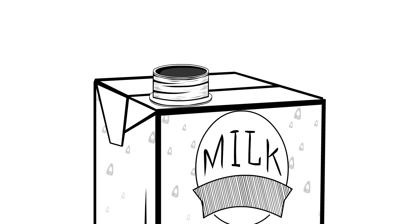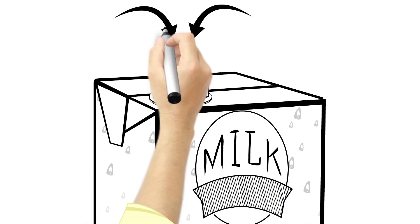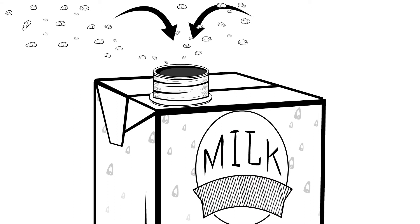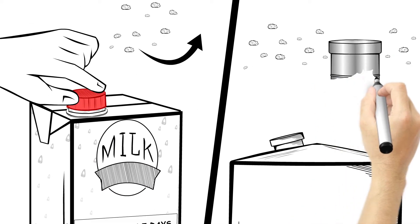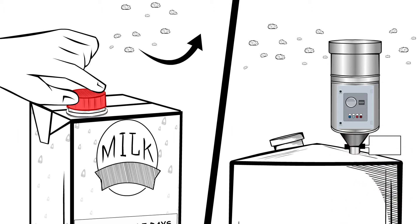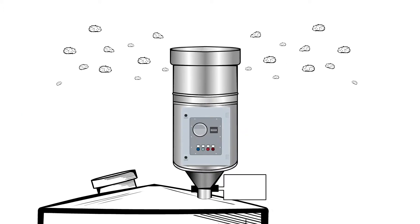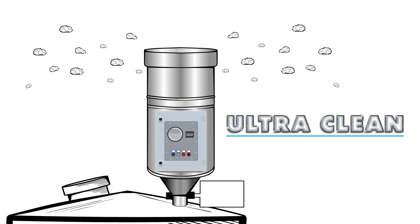This is because airborne contaminants are introduced to the product as soon as it is opened. A lot like the cap on the milk carton, the SteriVent system stops airborne contaminants getting into your product, meaning that you have an ultra-clean product.